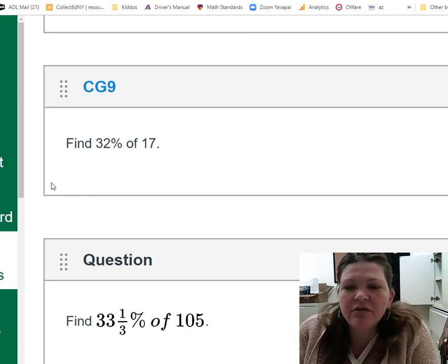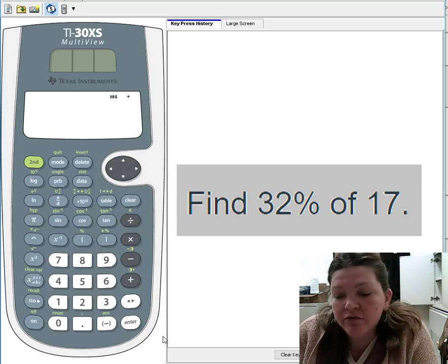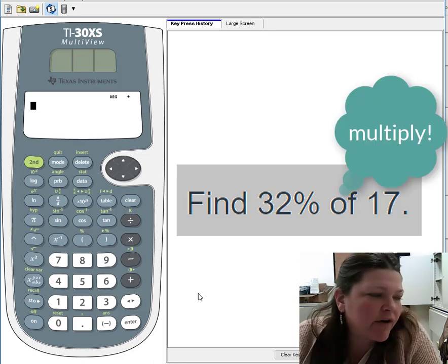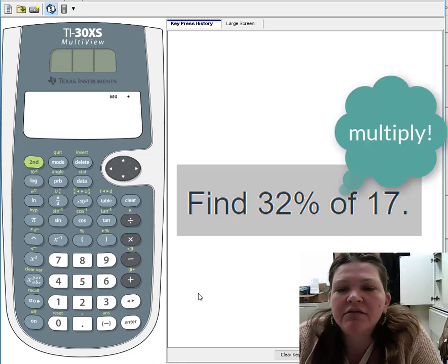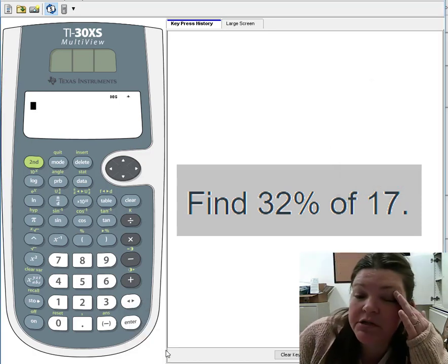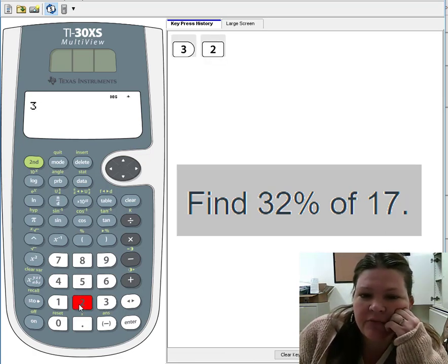Okay, the first one I have here says find 32% of 17. First thing you need to know is what the word 'of' means. 'Of' means multiply, whether you're finding half of something or 32% of something. Literally, 'of' means multiply.